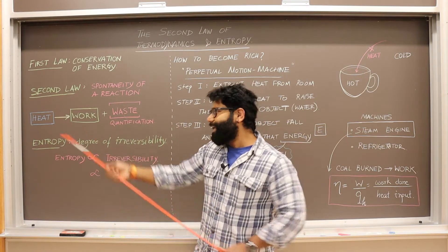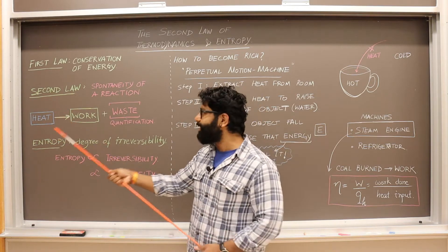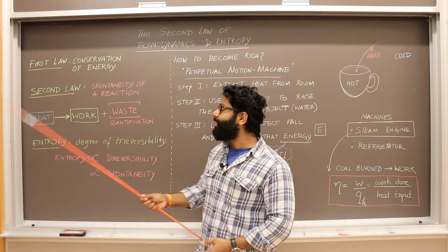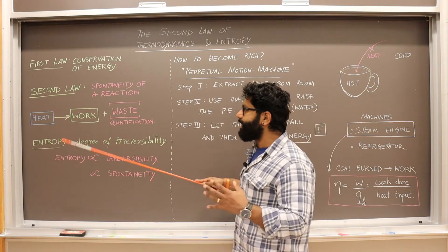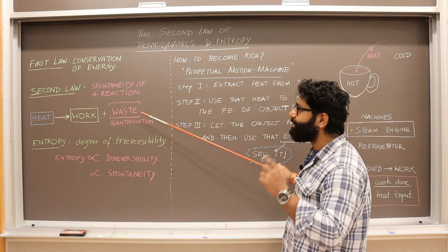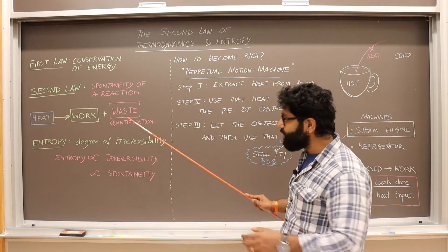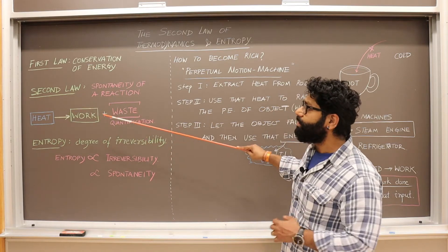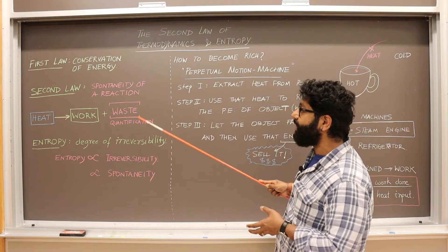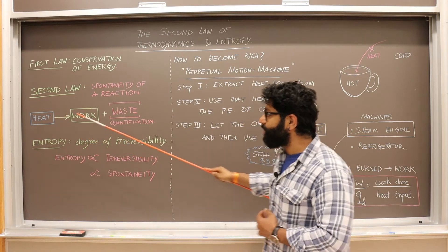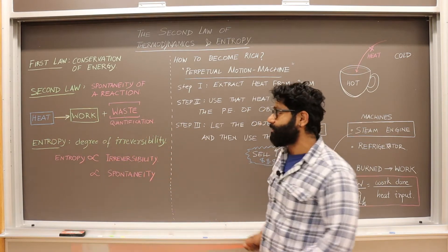Say you have a system that is getting heat from a higher temperature system, and you are trying to convert that heat into work. What the second law tells us is that this conversion is not perfect — there is always a waste associated with it. Not 100% of the heat will be converted to work. What the second law does is quantify the waste for us — the waste associated with converting heat to work.